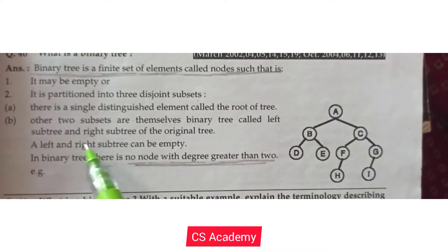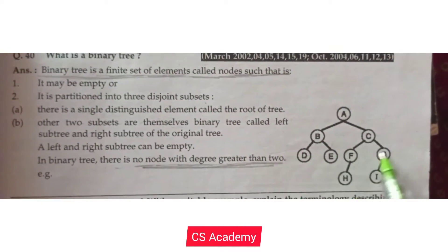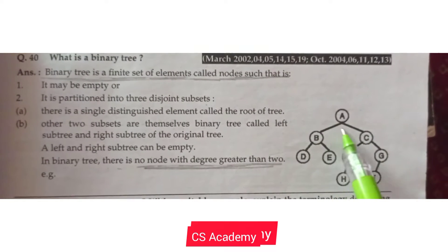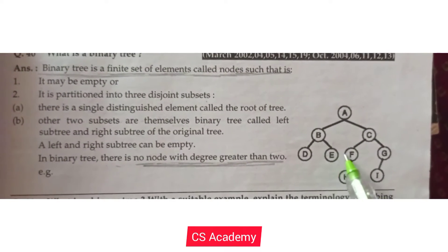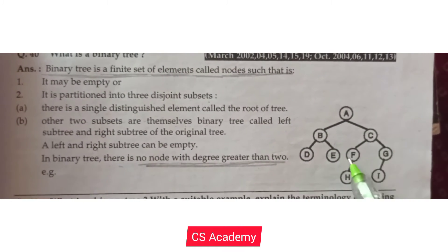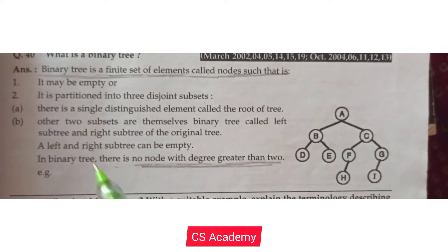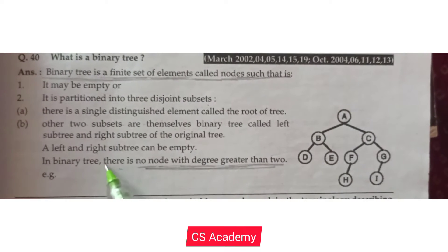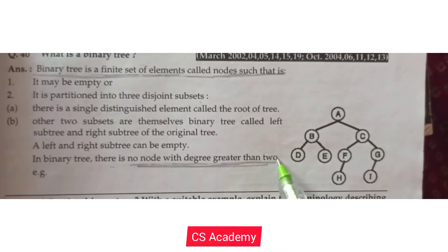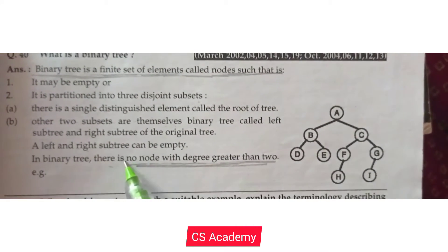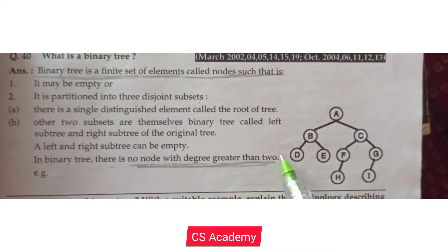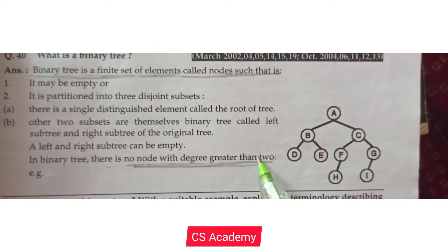The left and right subtrees can be empty. The root node condition is also true. In a binary tree, there is no node with a degree greater than two.